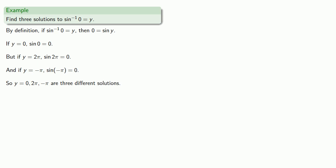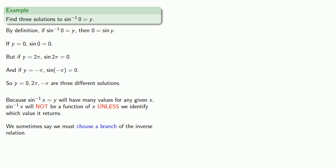In fact, there are many more. Because the inverse sine of x equals y will have many values of y for any given x, the inverse sine of x will not be a function of x unless we identify which of these many values it returns. We sometimes say we must choose a branch of the inverse relation.